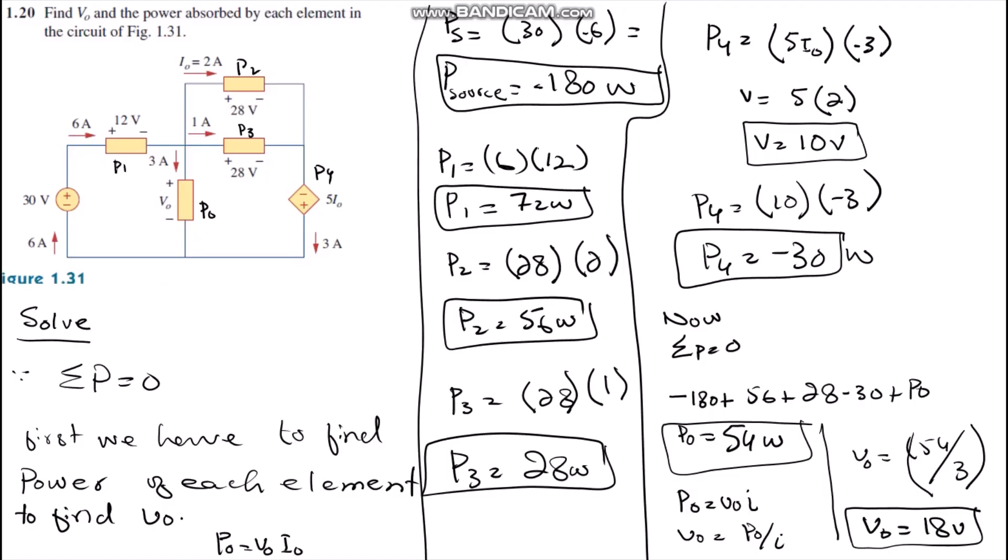Hello everyone, today we are going to solve question number 1.20, which is find V naught and the power absorbed by each element in the circuit. The circuit is this and the V naught is here.